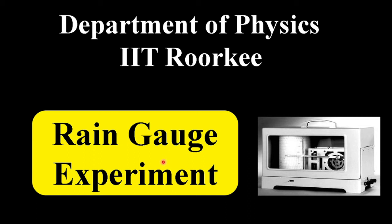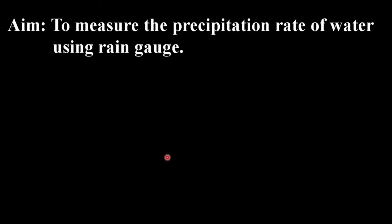Hello everyone. Today we will learn about the rain gauge experiment. The aim of our experiment is to measure the precipitation rate of water using a rain gauge.